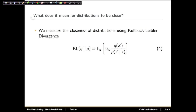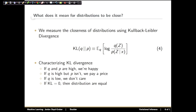On the previous slide, I mentioned that we wanted the distributions to be close to each other. So what does it mean for two distributions to be close? We'll measure the closeness of distributions using something called KL divergence, or Kullback-Leibler divergence. And this is defined by this equation. You'll notice that if q and p are both high, then you get a low divergence, meaning they're close to each other. If q is high but p isn't, then we pay a price.